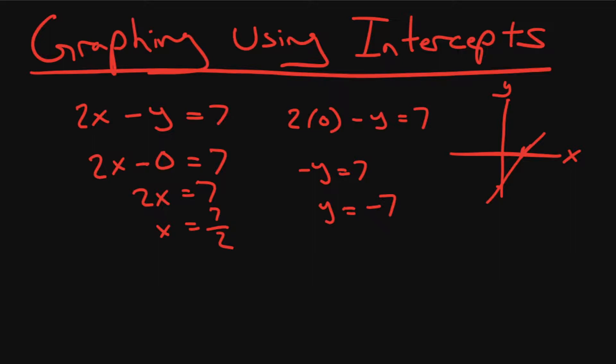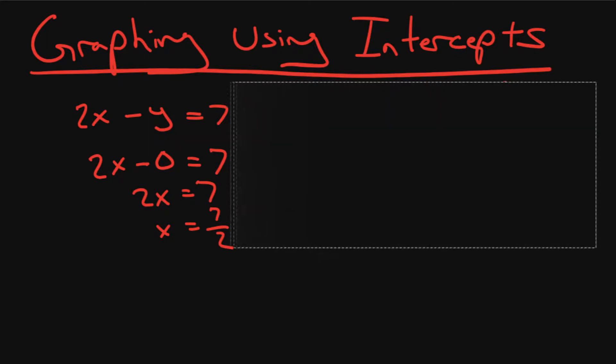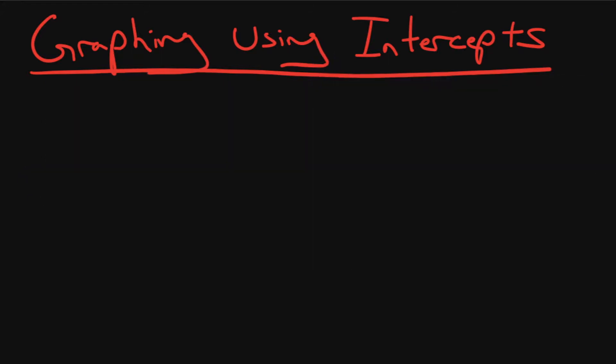So we can do one more example. Let's do 3x minus 5y plus 15 equals 0. Let's find the x-intercept where we know y is equal to 0. So we'll just drop the y, so 3x plus 15 equals 0. Now we want to isolate for x, so let's subtract 15 from both sides, and then let's divide both sides by 3. So we're left with x equals negative 5.